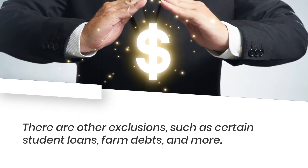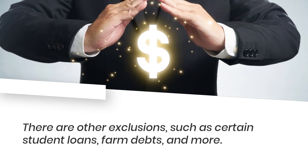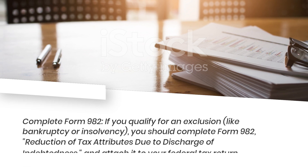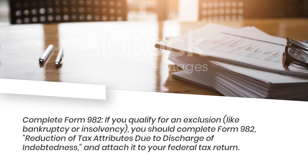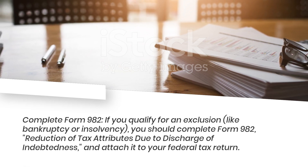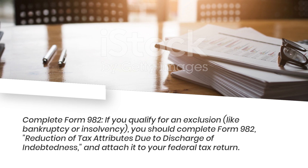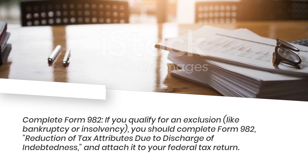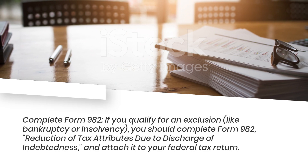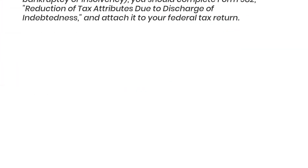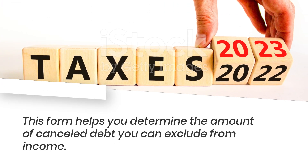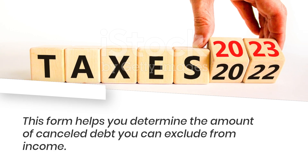There are other exclusions, such as certain student loans, farm debts, and more. Complete Form 982. If you qualify for an exclusion like bankruptcy or insolvency, you should complete Form 982, Reduction of Tax Attributes Due to Discharge of Indebtedness, and attach it to your federal tax return. This form helps you determine the amount of cancelled debt you can exclude from income.